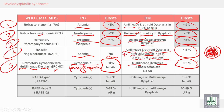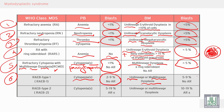Condition six is refractory anemia with excess blasts type 1, characterized by cytopenia. Here we have unilineage or multilineage dysplasia. In this condition we concentrate on the percentage of blasts. If the percentage of blasts in the peripheral blood is two to nine percent with no Auer rods, and in the bone marrow from five to nine percent with Auer rods, it is called refractory anemia with excess blasts type one.